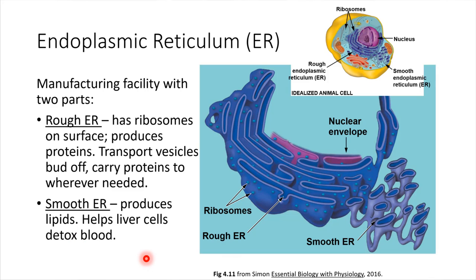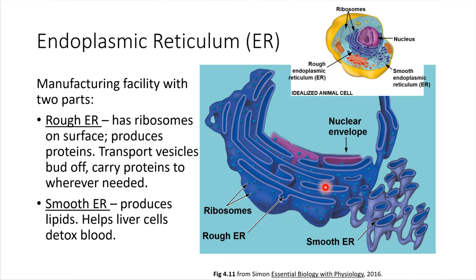The endoplasmic reticulum is a pretty large organelle that extends to a number of different regions inside of the cell. In this close-up, we've just removed the nucleus. The endoplasmic reticulum has two different sections. There's the rough endoplasmic reticulum, or rough ER for short. It's called rough because it has a bumpy surface, and what those bumps are are ribosomes — ribosomes are studded on the surface of the rough ER. The other section is called the smooth ER, and that's called smooth because it doesn't have those bumps on it.